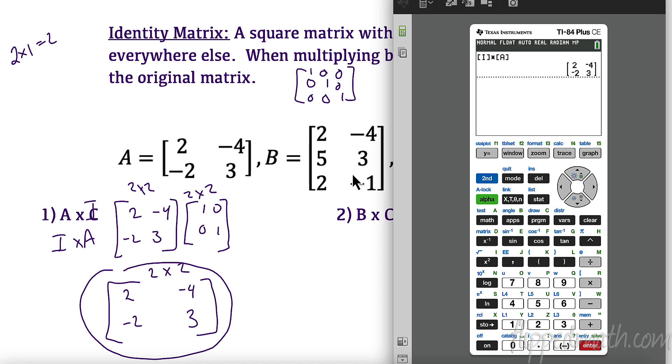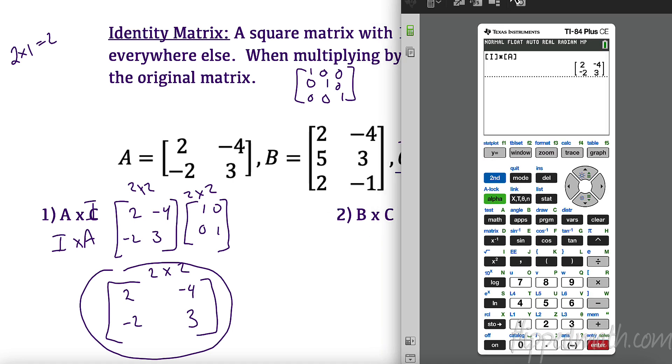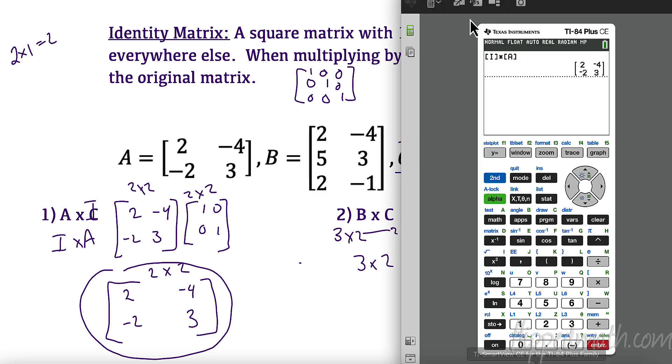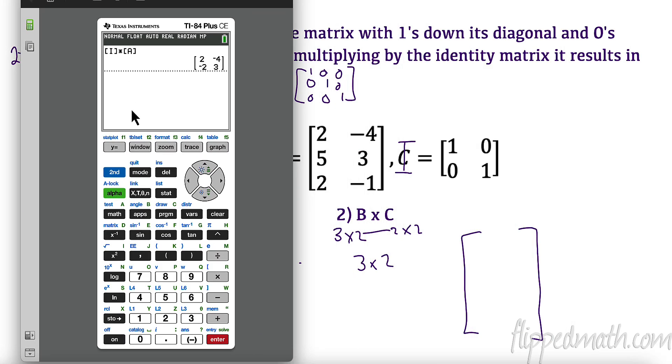Now, let's try something else. Let's try and multiply B times our identity matrix. The first thing we want to talk about here, this is now a 3 by 2, and this is a 2 by 2. These match, and I get a 3 by 2 back. So, the possibility of getting the matrix I want back is possible. Let's see if it's reality, though. So, I'm going to go matrix B times matrix I. And, what do we get? We got 2, negative 4, 5, 3, 2, negative 1. So, yes. We multiplied a 3 by 2 matrix by our identity matrix, and it did work.